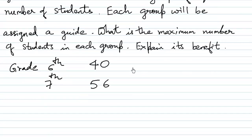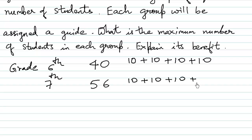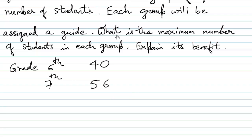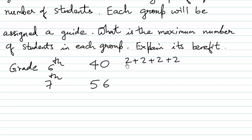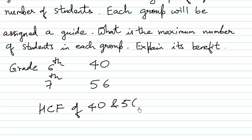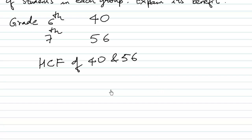One possible solution is groups of 10 — that gives 4 groups of 10 for the 40 students. But 56 cannot be divided into groups of 10 evenly since the last group would only have 6. We could also divide into groups of 4 or groups of 2, but the answer we want is the maximum group size, which is the HCF of 40 and 56.